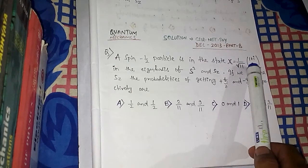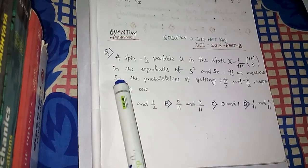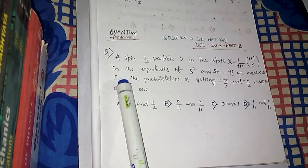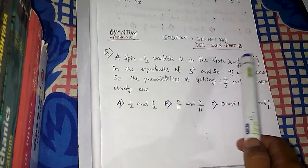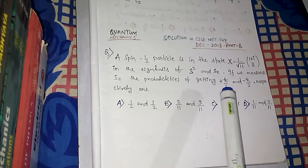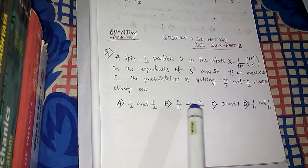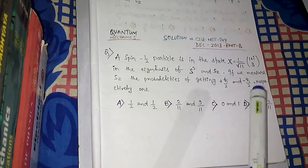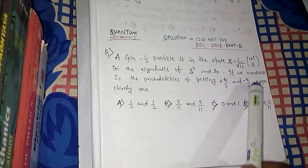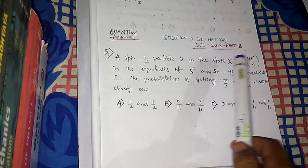The spin state has been given for a particle with spin-half. If you measure Sz, the z-component of the spin angular momentum, you will get one of two results at a time: either plus h-bar/2 or minus h-bar/2. The question asks what is the probability of getting each result when you measure Sz on this spin state chi.